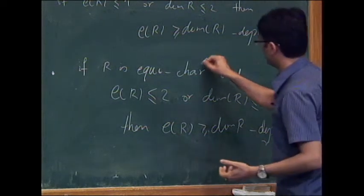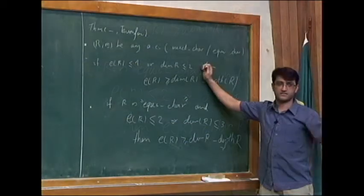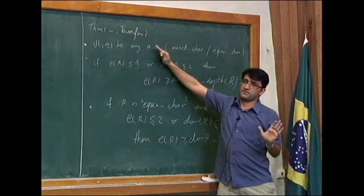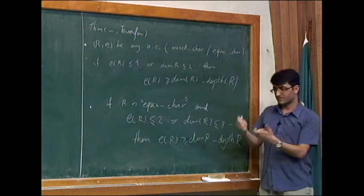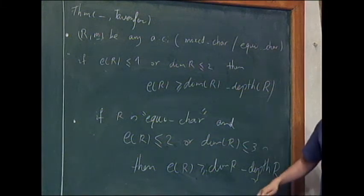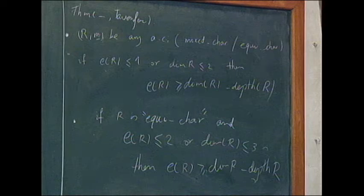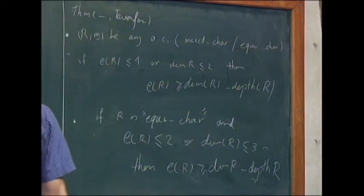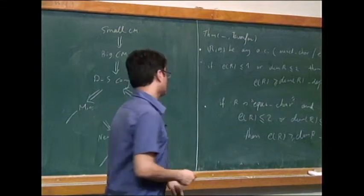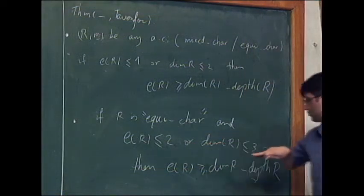In the second part, we proved that if R is equicharacteristic — meaning contains a field, whether characteristic zero or positive — and multiplicity of R is at most 2, or dimension of R is at most 3, then again the same inequality holds. Here we need the equicharacteristic assumption because our method requires the ring to contain a field. We tried a lot to go further, to prove it for multiplicity 3 or higher dimension, but we couldn't.